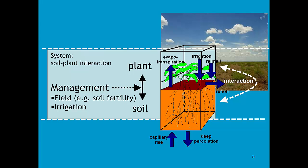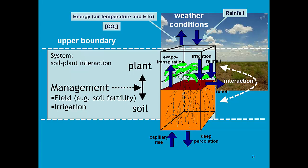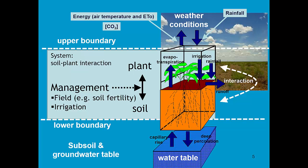We have to link our system to the outside world. At the upper boundary we look at the weather conditions: what is the rainfall, how much energy is available to vaporize water, and what is the CO2 concentration. At the lower boundary we are looking at the water table, to which the water from our system will drain. If the water table is close to the subsoil, water can move by capillary rise from the water table to the subsoil.